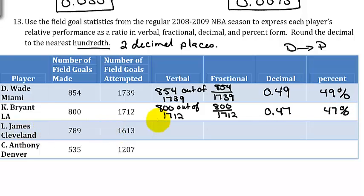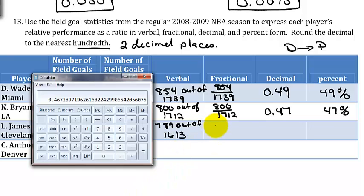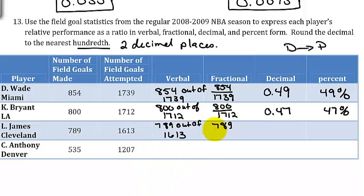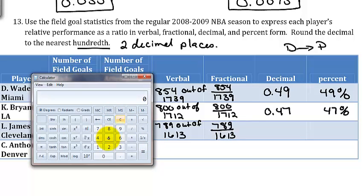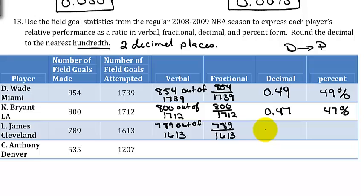For James from Cleveland, it's going to be 789 out of 1,613. Fraction form, 789 over 1,613. Then we need to compute our decimal. That would be 789 divided by 1,613. We get 0.489, so I need to round this up to 0.49. That would be 49% again.